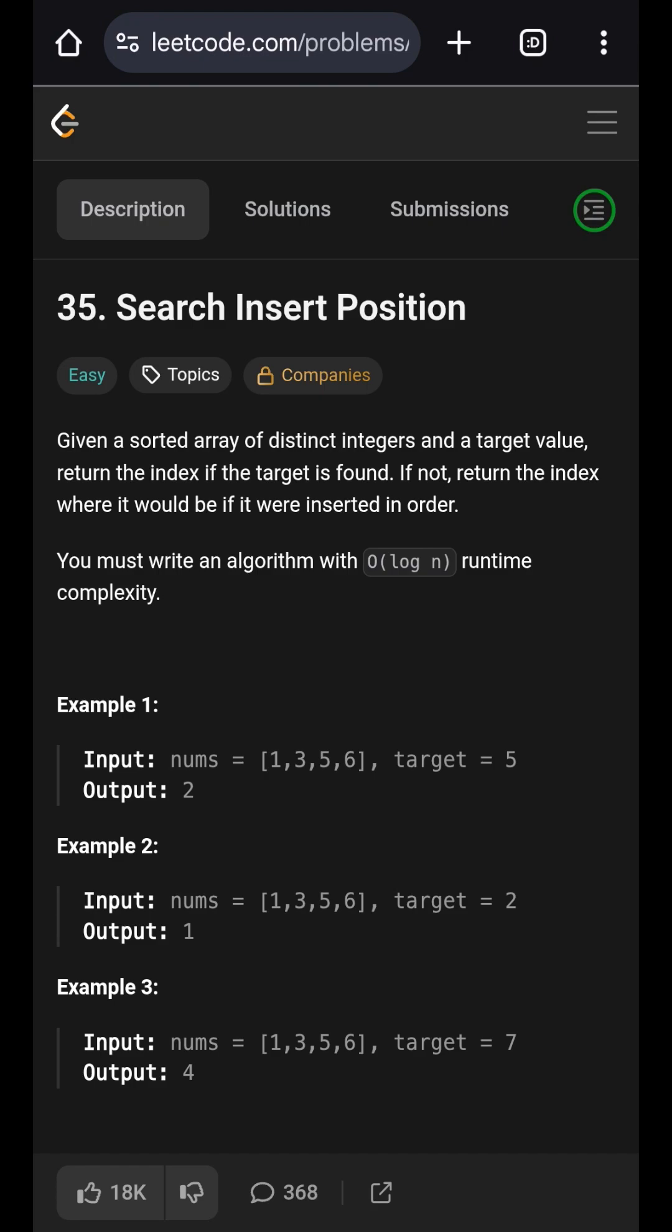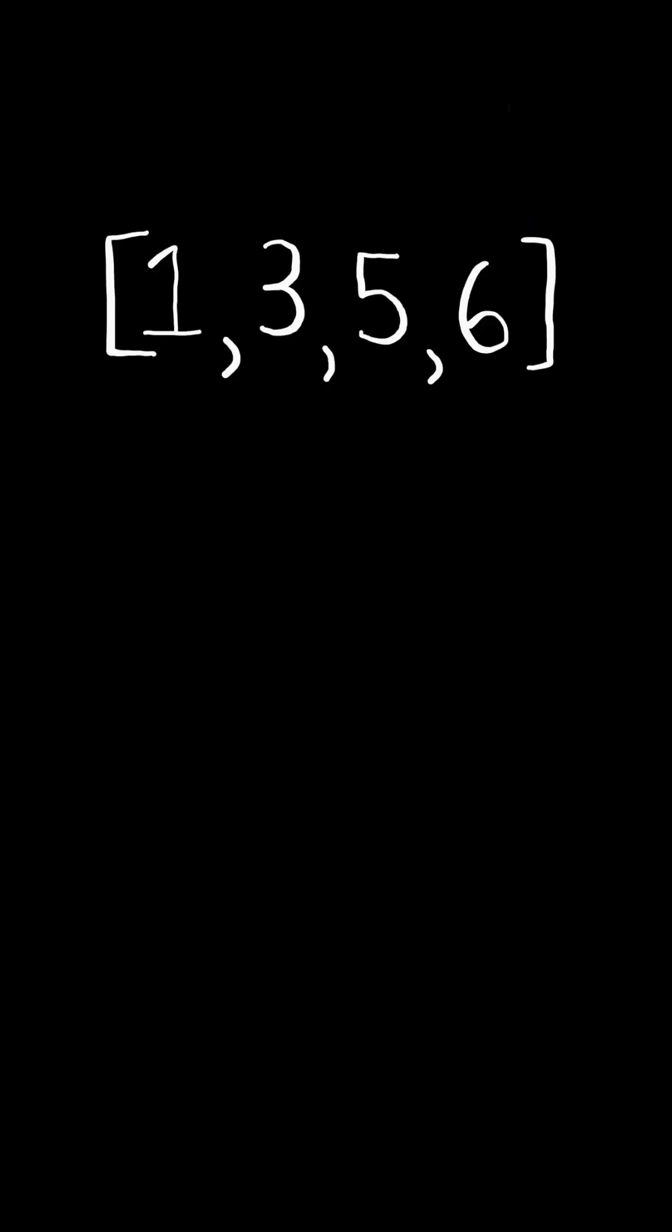Search insert position. Given a list of distinct integers sorted in increasing order and an integer target, return the index of where target exists in the list. In this case, 5 exists at index 2.